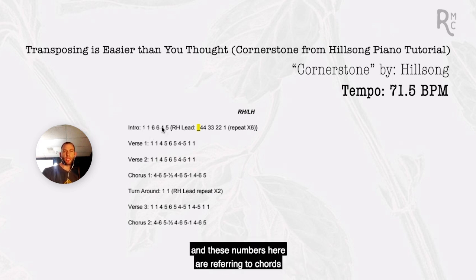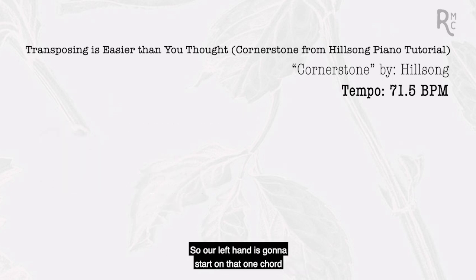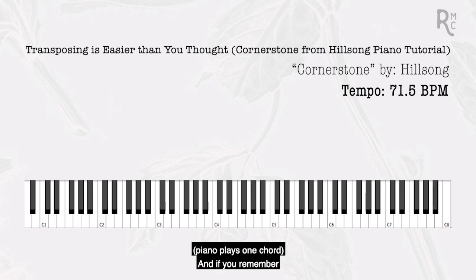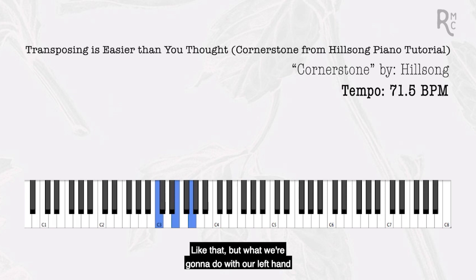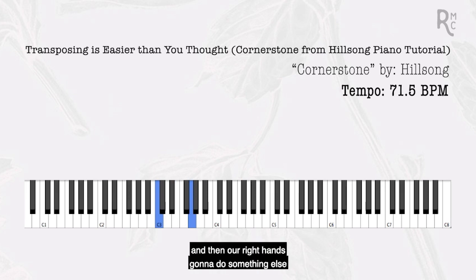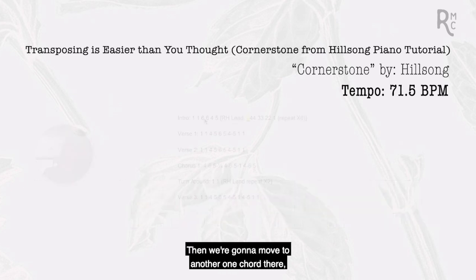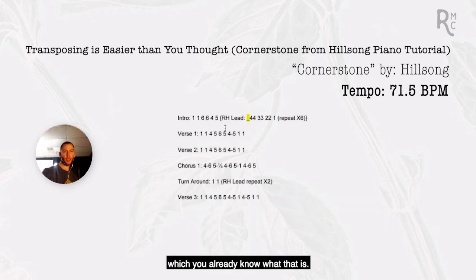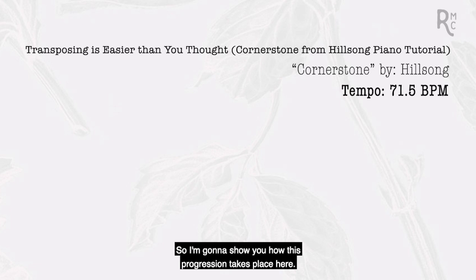The numbers on the chart refer to chords we're playing in the key of C. Our left hand starts on the one chord — we remove the middle note so we don't muddy up the lower pitched notes, which have longer waveforms and don't sound as good with more notes stacked together. So we just play the two outer notes. The intro progression goes: one, one, six, six, four, five.